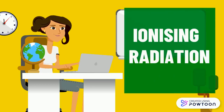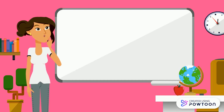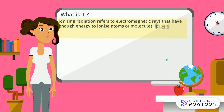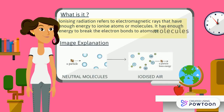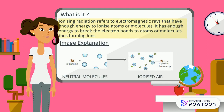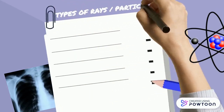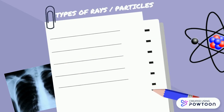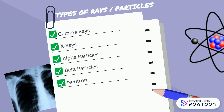Ionizing radiation refers to electromagnetic rays that have enough energy to ionize atoms or molecules. It has enough energy to break the electron bonds to atoms or molecules, thus forming ions. Ionizing radiation is emitted from radioactive atomic structures as high energy electromagnetic waves such as gamma rays and x-rays, or as actual particles — for example, alpha particles, beta particles, and neutrons.